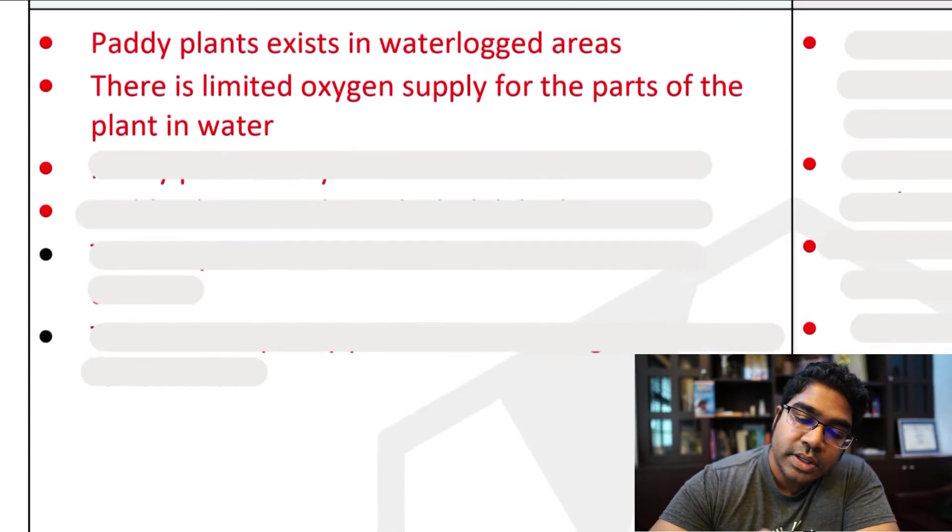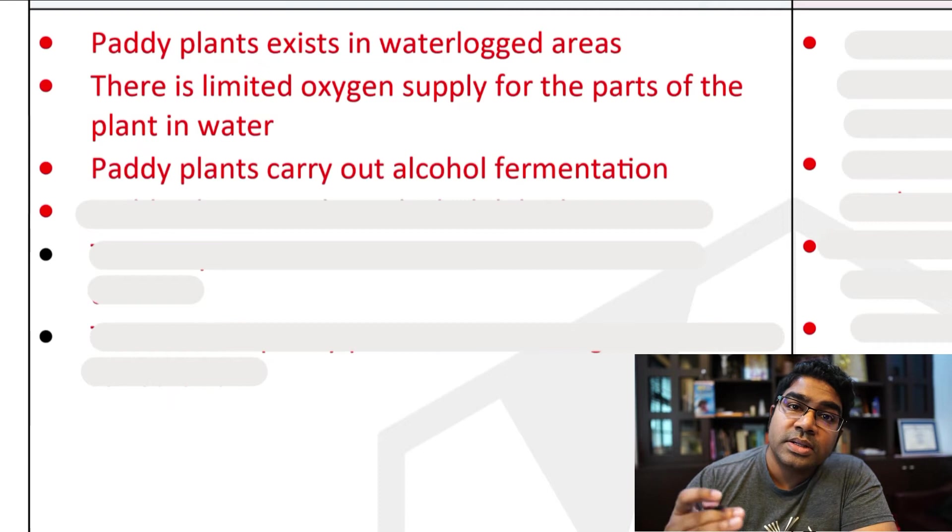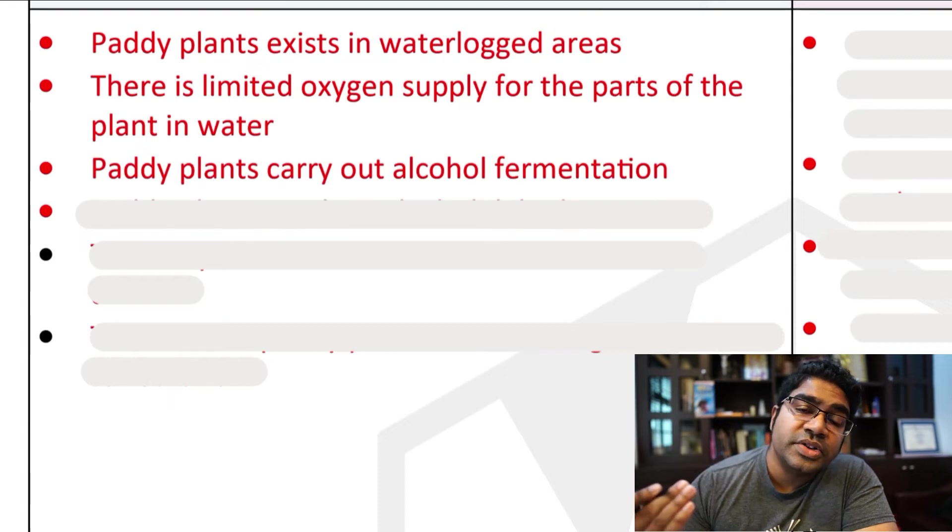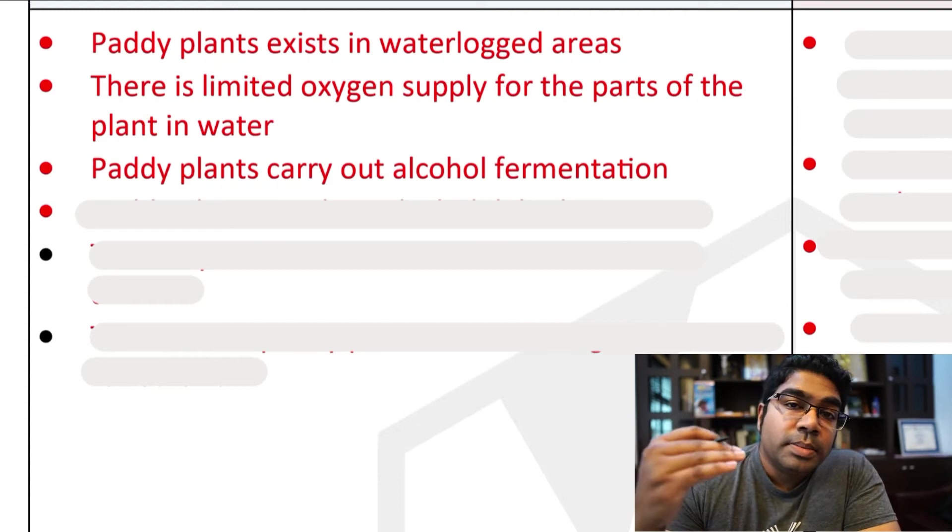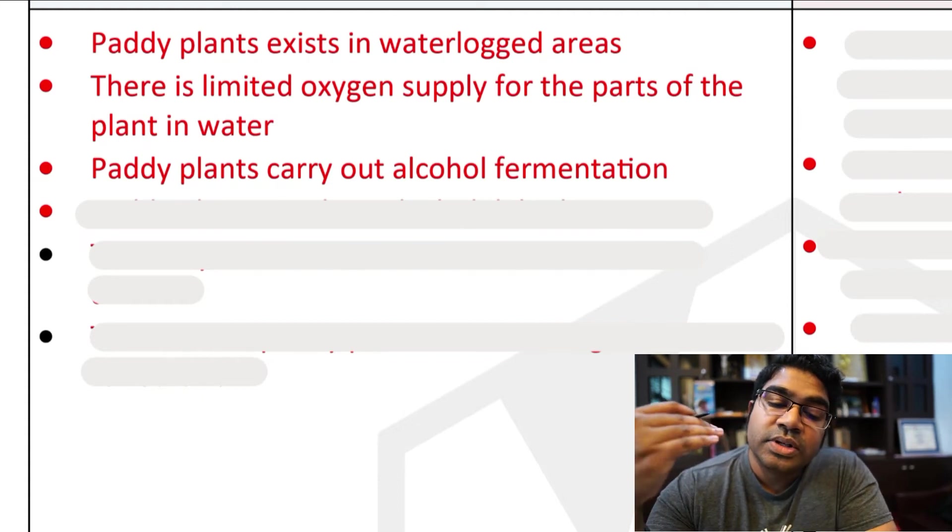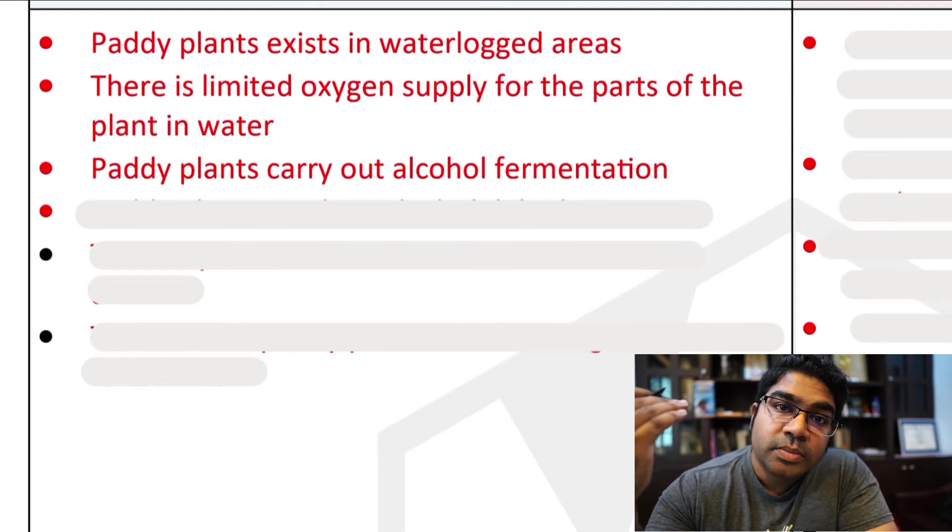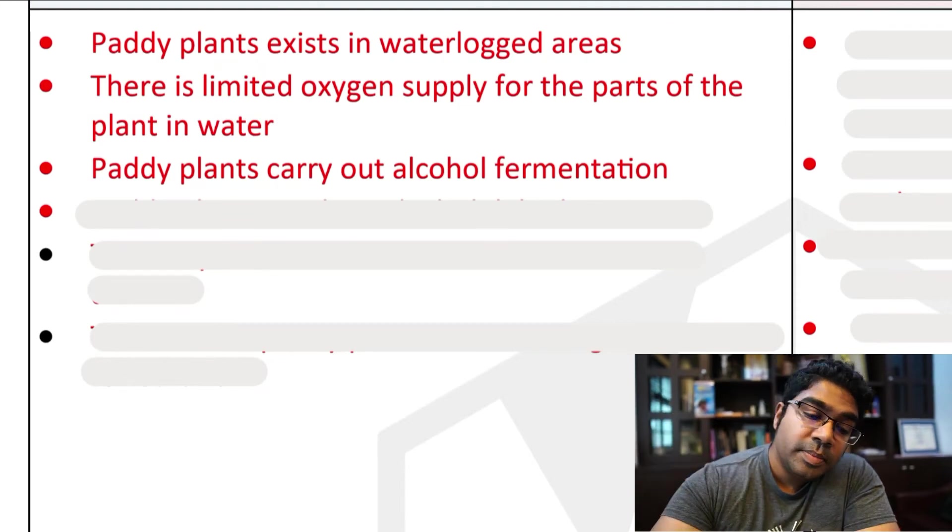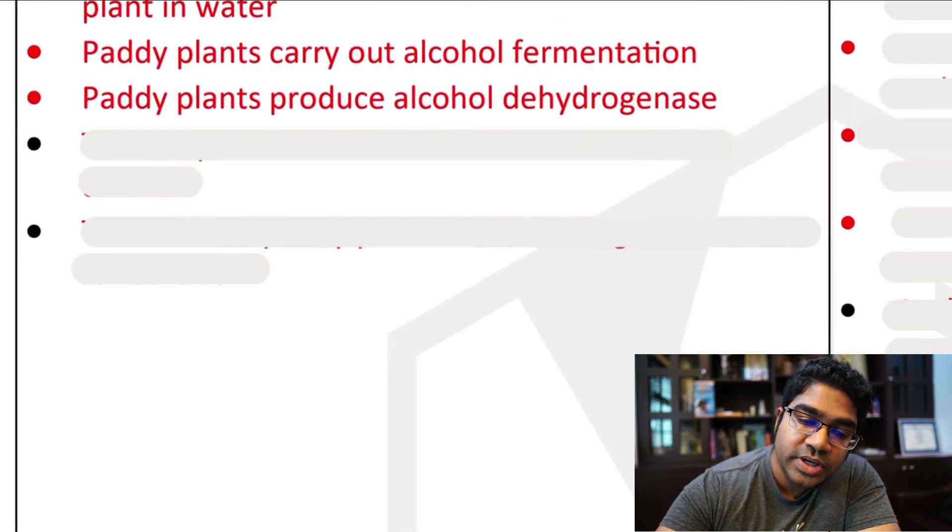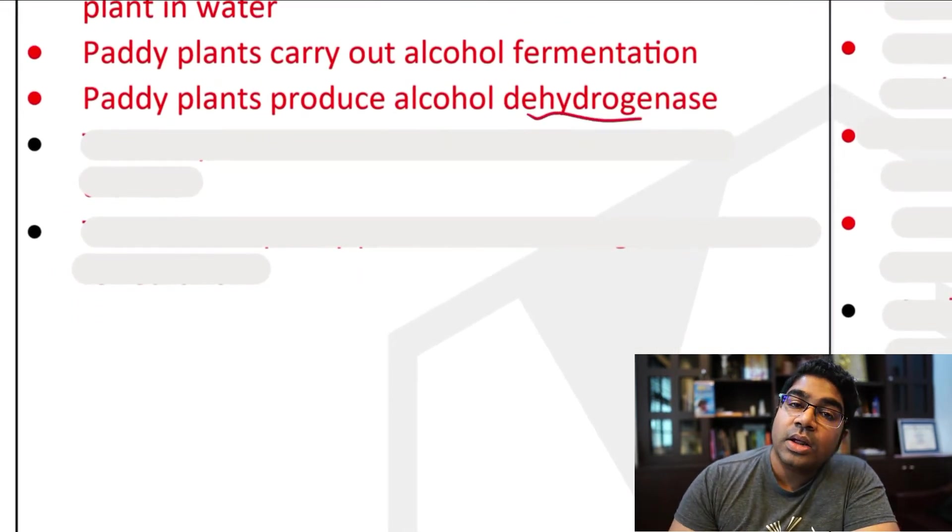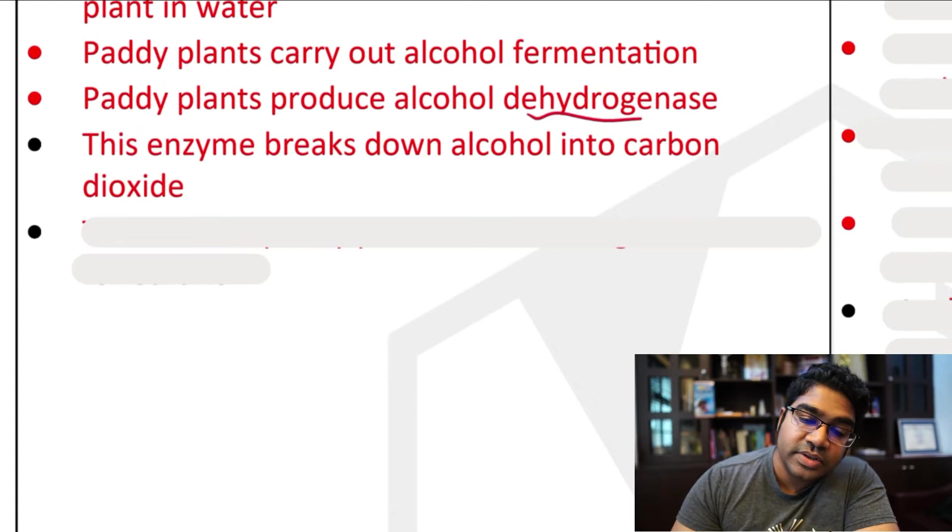So what's going to happen here is the paddy plants are going to carry out alcohol fermentation and so ethanol is produced in these paddy plants. In normal plants, this alcohol that is produced is actually toxic and it will kill the plant. However, paddy plants are special because they produce alcohol dehydrogenase in large quantities. Alcohol dehydrogenase actually breaks down the alcohol into harmless carbon dioxide.